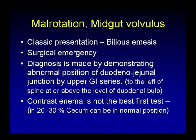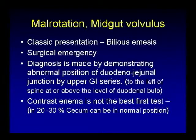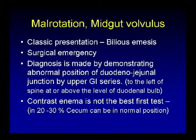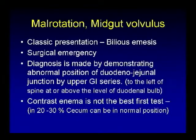The normal position of the duodeno-jejunal junction is to the left side of the spine at the level of the duodenal bulb. In equivocal cases, you may proceed to contrast enema to demonstrate abnormal position of the cecum, which in malrotation is in the midline and high in the right upper quadrant. However, the cecum can be in normal position in 20-30% of cases, so contrast enema is not usually the first-line investigation for malrotation.